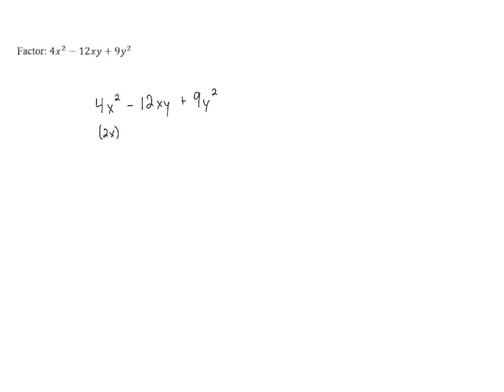The last term is also a perfect square, 9y squared is the quantity 3y squared.